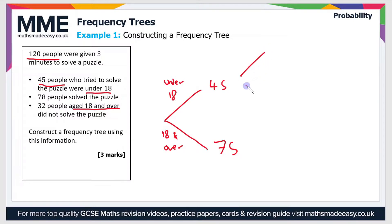So now we can subdivide our two categories even further into people who solved the puzzle and people who didn't solve the puzzle. So let's label the branches solved and not solved, and we'll do the same for the bottom.